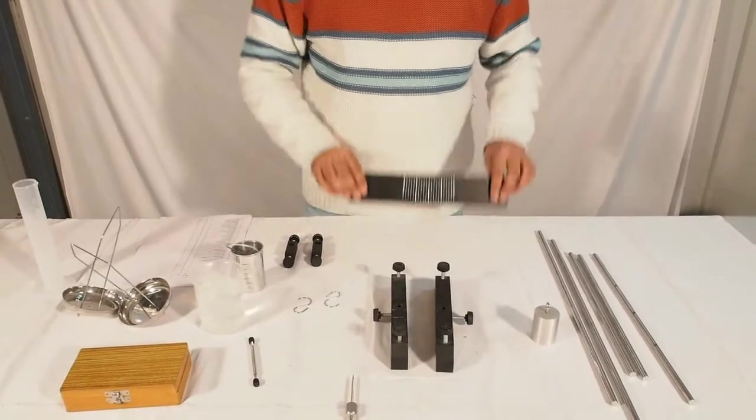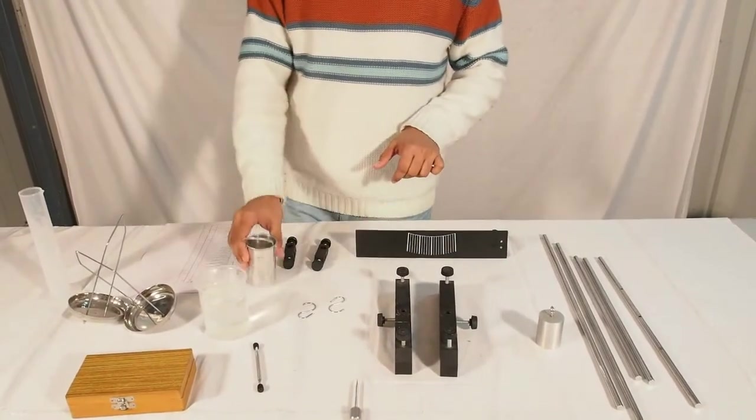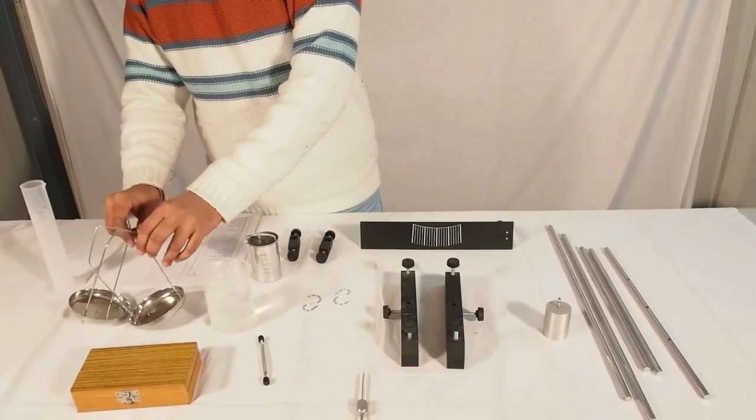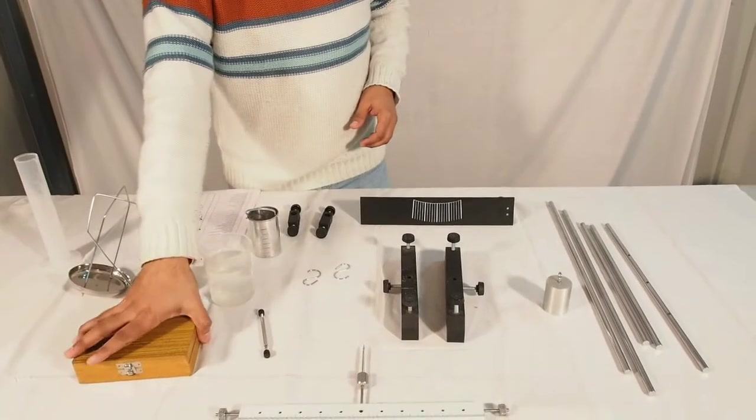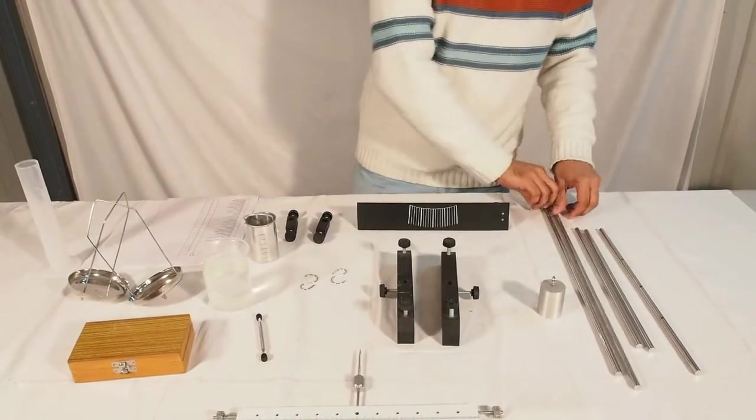Also required are two plastic boss heads, one bucket, two pans with hooks, one graduated cylinder of 100 milliliters, one weight box, two rods of length 50 centimeters, two rods of length 35 centimeters, one rod with hole of 40 centimeters, and one solid aluminum cylinder.